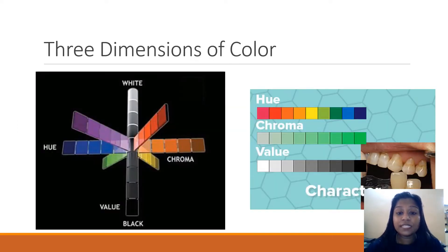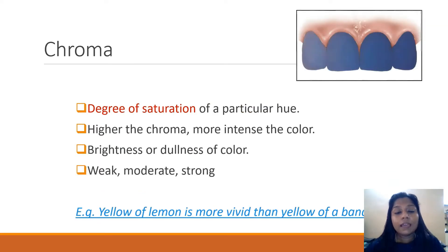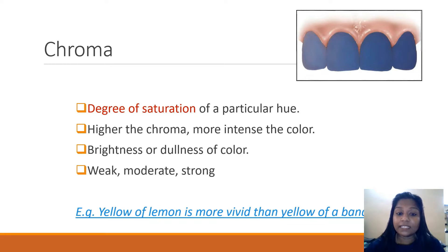The three dimensions of color are hue, chroma, and value. Hue is the dominant color of the object, referring to the dominant wavelengths in the spectral distribution — for example, the color of a lemon is yellow. Chroma is the degree of saturation of a particular hue; the chroma scale starts from achromatic or zero, with increasing values indicating stronger color. Higher chroma means more intense color, and a color is classified as weak, moderate, or strong according to its chroma.